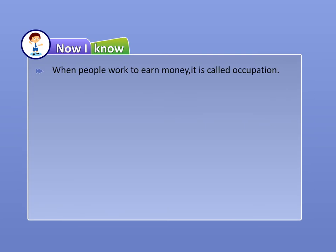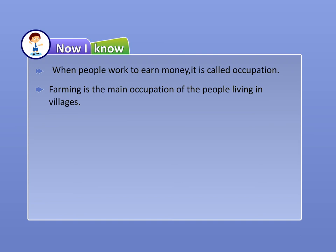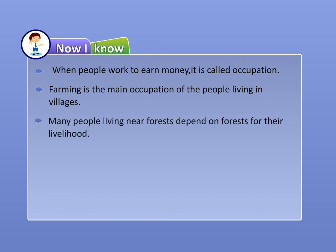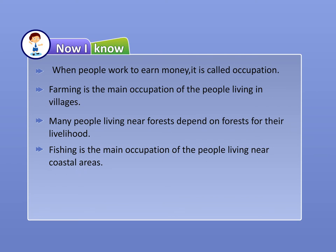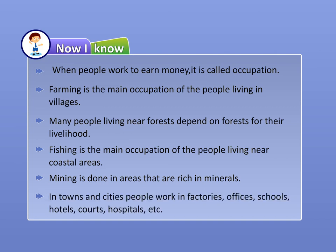Now I Know. When people work to earn money, it is called occupation. Farming is the main occupation of the people living in villages. Many people living near forests depend on forests for their livelihood. Fishing is the main occupation of the people living near coastal areas. Mining is done in areas that are rich in minerals. In towns and cities, people work in factories, offices, schools, hotels, courts, hospitals, etc.